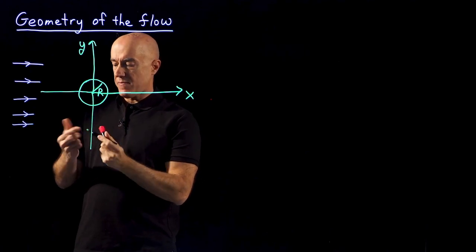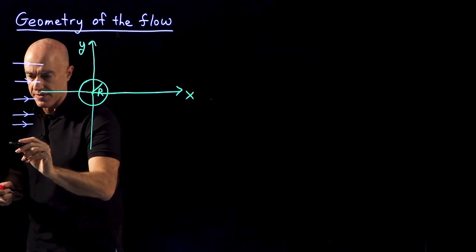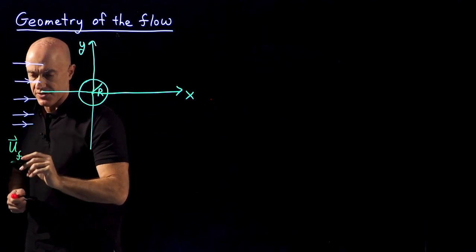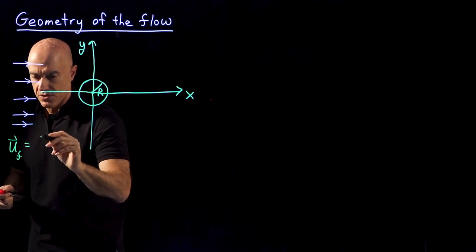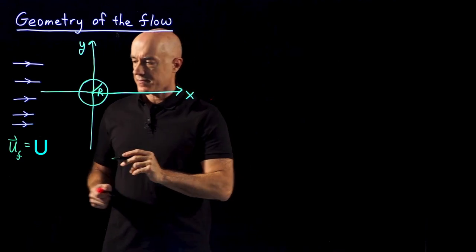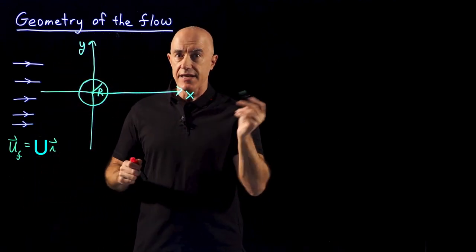The free stream velocity then is in the x-axis. So we can write the free stream velocity u_f, which is a vector, is equal to a constant U times the unit vector in the x-axis direction.